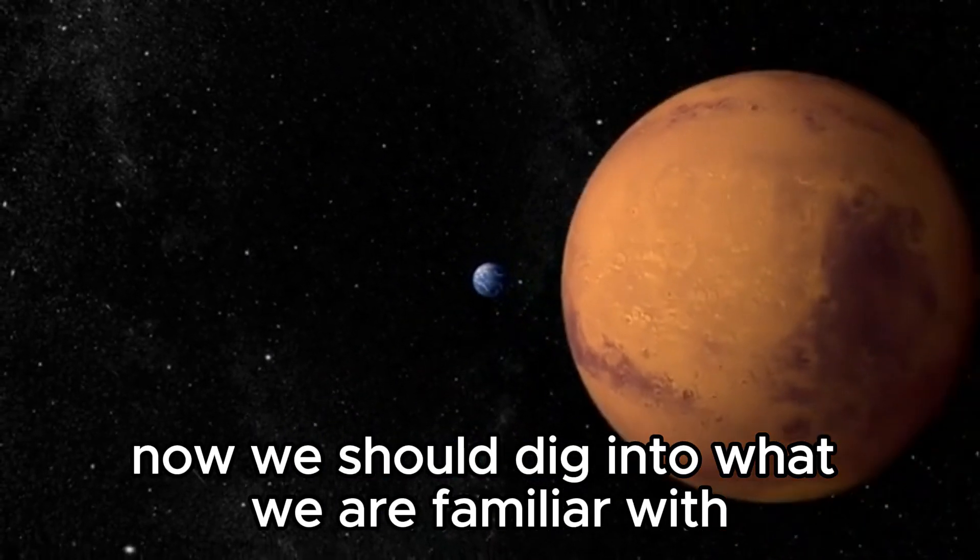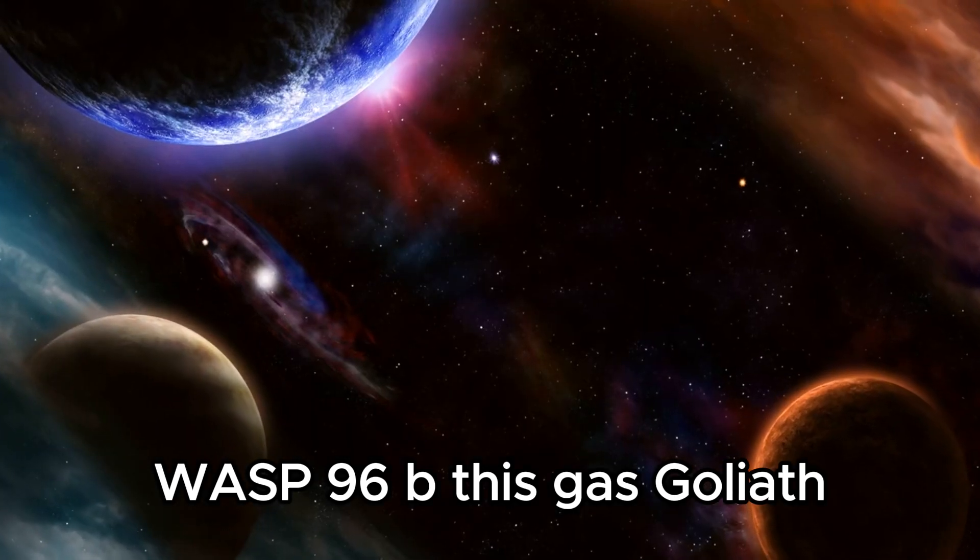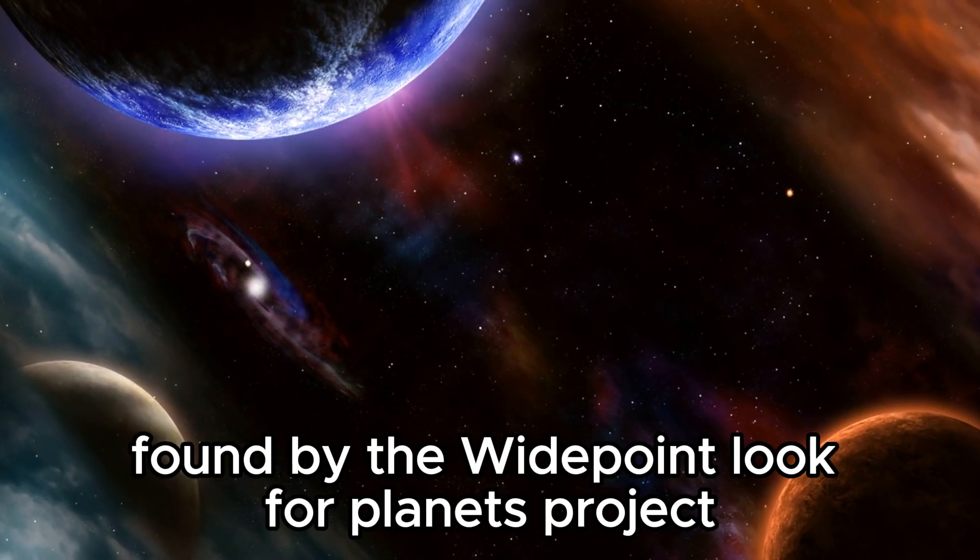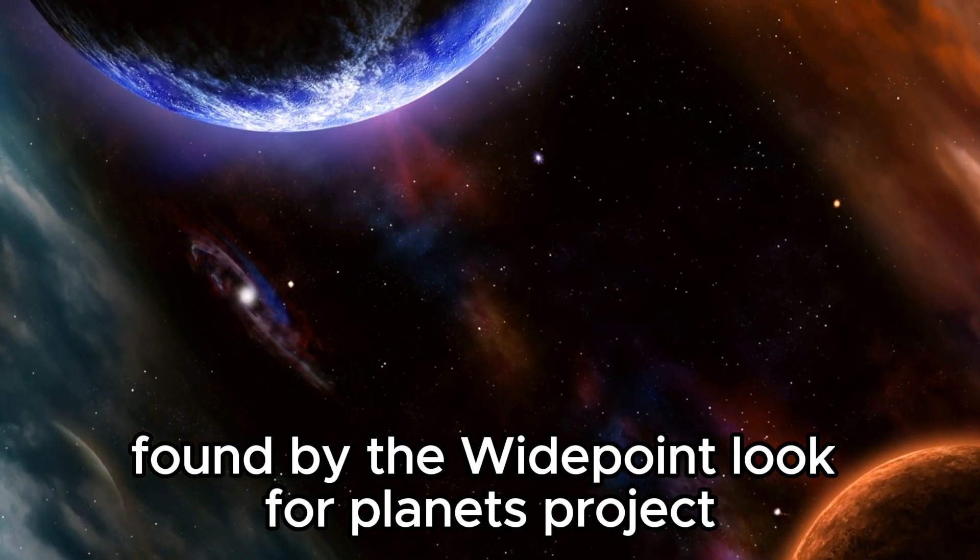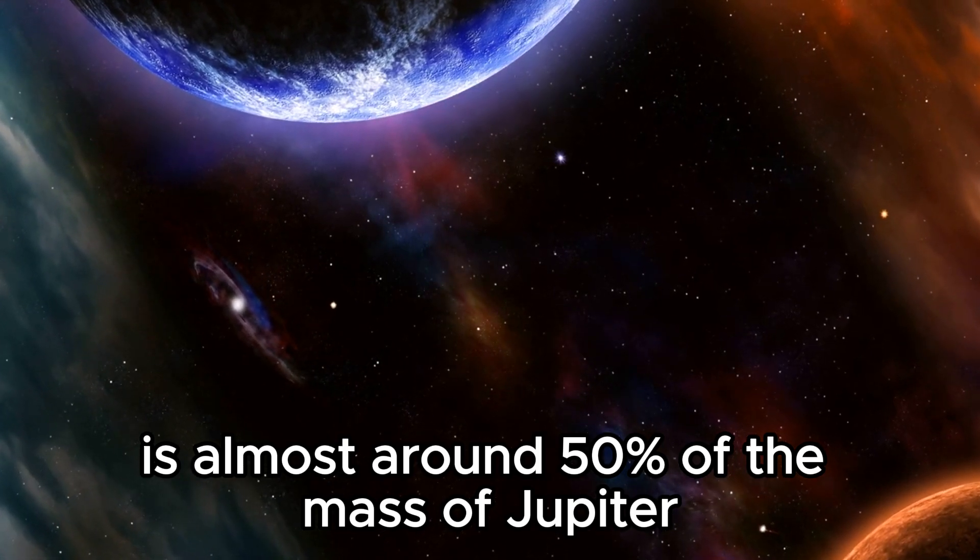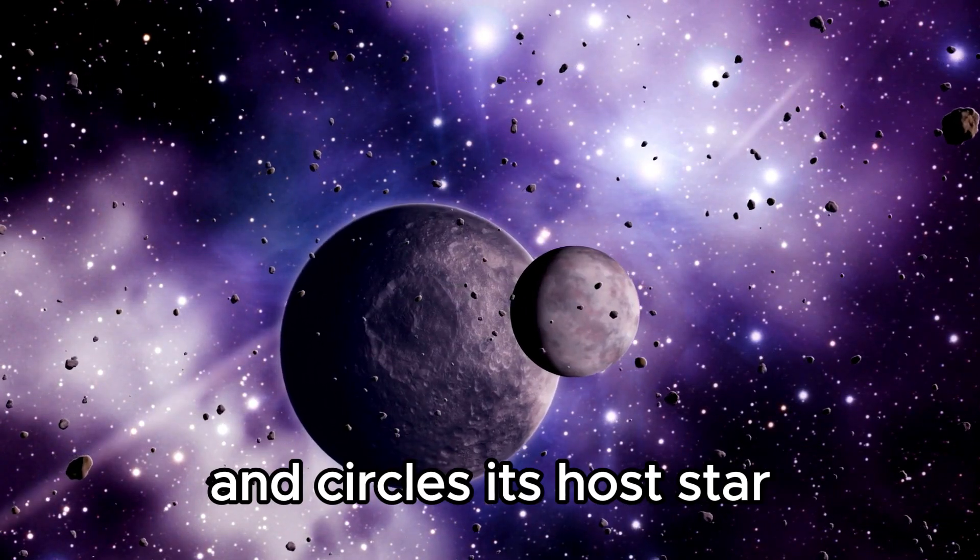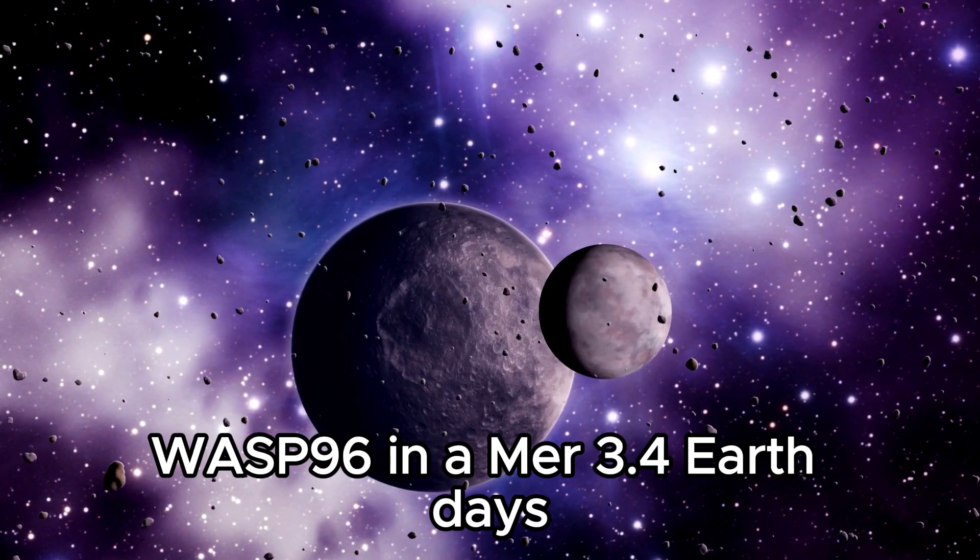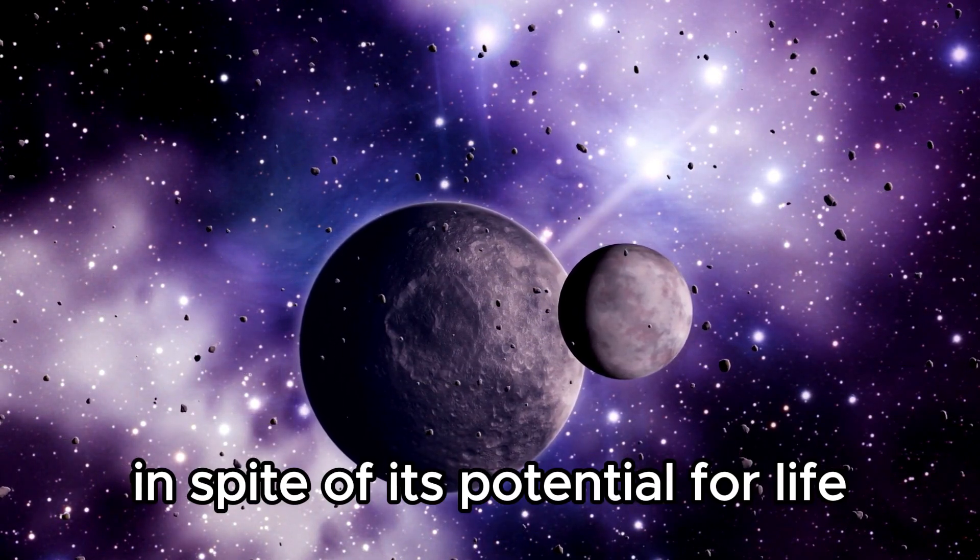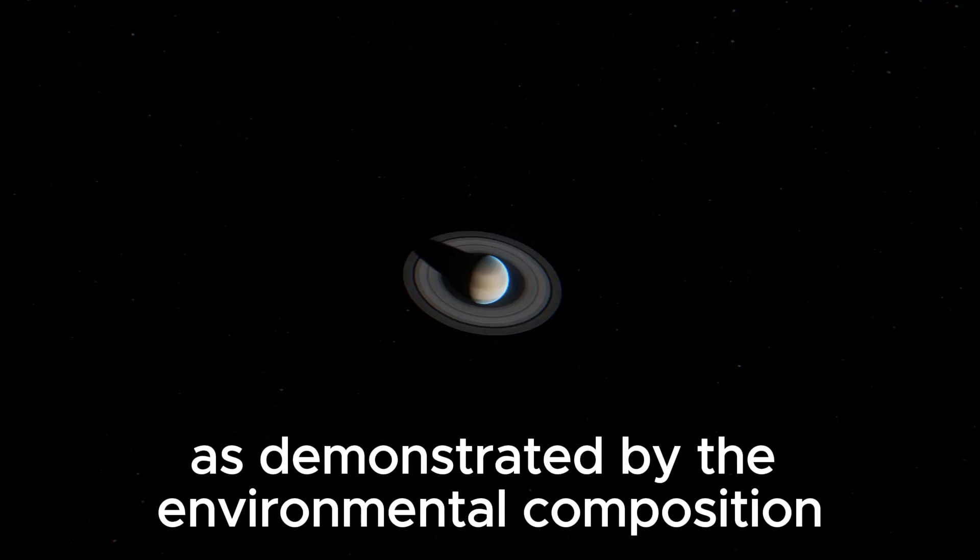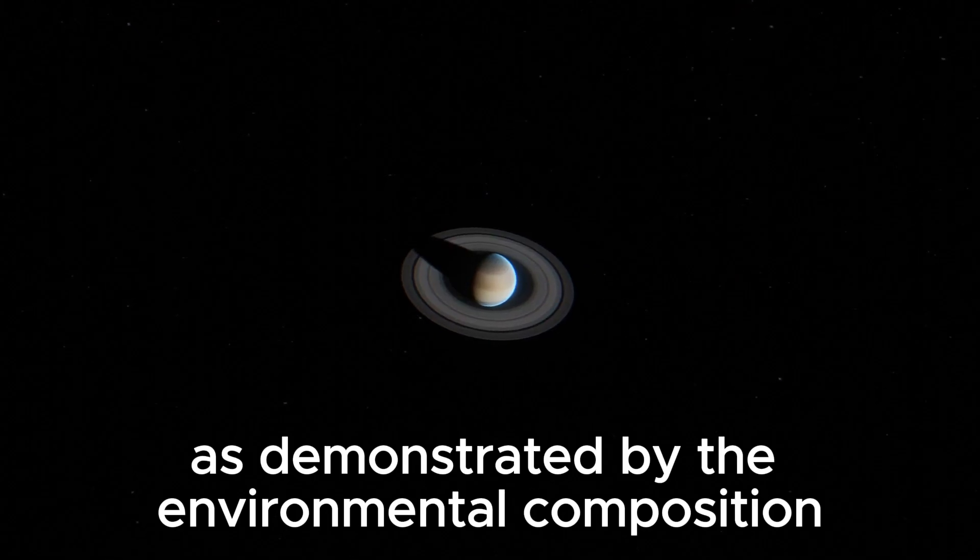Now we should dig into what we are familiar with WASP-96b. This gas goliath, found by the Wide Angle Look for Planets project, is almost around 50% of the mass of Jupiter and circles its host star WASP-96 in a mere 3.4 Earth days, in spite of its potential for life, as demonstrated by the environmental composition.